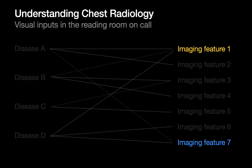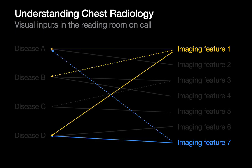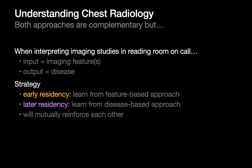After all, if you're on call in the reading room, what you're usually going to be presented with — the input — are the imaging features. You'll see something on a patient's CT or x-ray, and it's up to you to think about: with imaging feature one, what are the diseases associated with it? And imaging feature seven, which I'm also seeing, what are its diseases — and get a sense of what makes the most sense. There are different ways of approaching chest radiology which are complementary, but from the perspective of an early learner, I personally favor a feature-based approach.